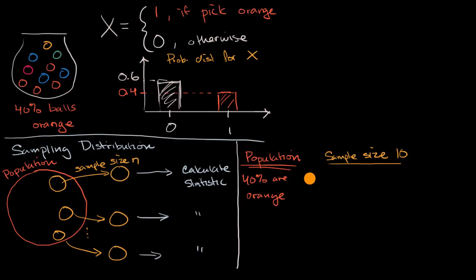And every time we calculate the statistic for our sample of what percentage are orange. So let's say the first time we take a sample, we get three oranges. Let's say the next time we get two oranges. Actually, let me do these as a proportion. So if my sample size is 10, I get three oranges, which is 30%.